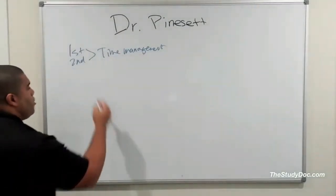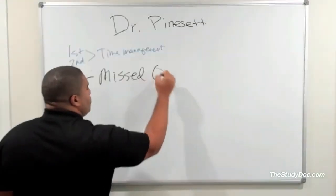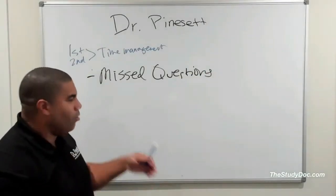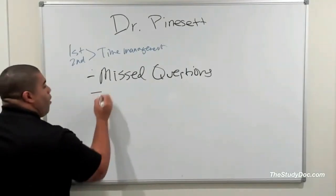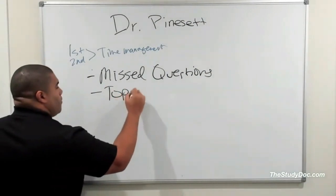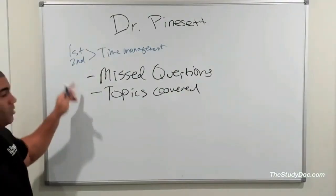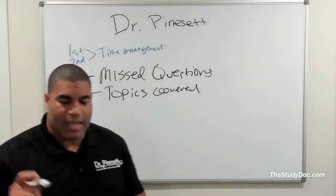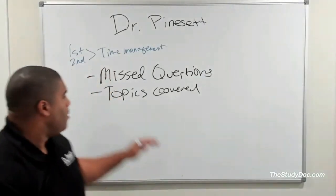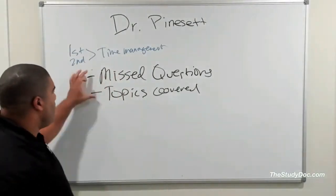A lot of students use what's called the missed questions list — a lot of different names for this — but they have a whole list or file of missed questions. They also have a list of topics they've covered. So they have essentially two sets of notes. The first principle of note-taking is that we want our notes to be clear and concise. If we have two sets, our notes are not going to be concise, and they're going to be muddled.